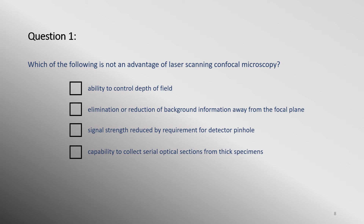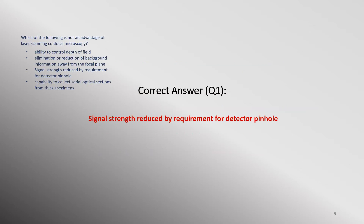Try to answer this question: Which of the following is not an advantage of laser scanning confocal microscopy? Ability to control depth of field. Elimination or reduction of background information away from the focal plane. The signal strength reduced by the requirement for a detector pinhole. Capability to collect serial optical sections from thick specimens. The pinhole is an essential part of a confocal microscope — it provides better resolution in terms of depth, allowing optical sectioning and elimination of background fluorescence. The downside is the loss of signal.